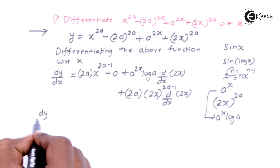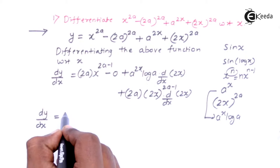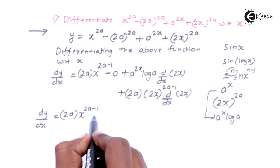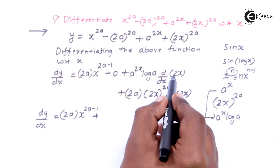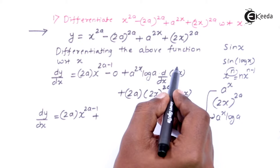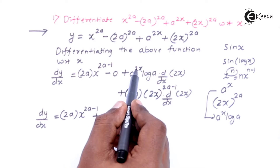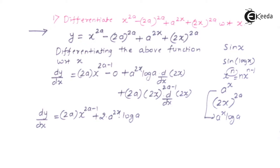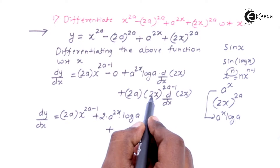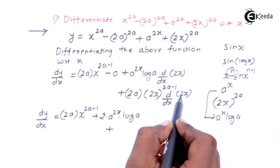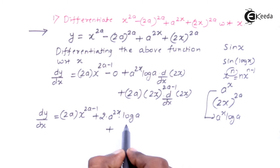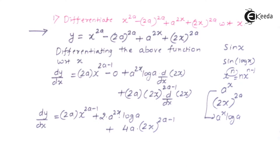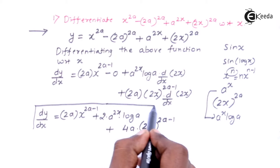Continuing, dy/dx equals 2a·x raised to 2a minus 1, plus the derivative of 2x, which is 2, times a raised to 2x times log a — giving 2·a raised to 2x·log a. Plus 2a times (2x) raised to 2a minus 1 times derivative of 2x, which is 2 — giving 4a·(2x) raised to 2a minus 1. So this is the derivative of the given function.